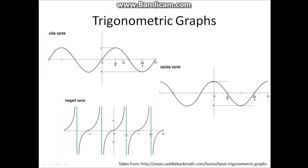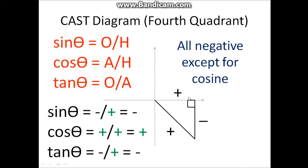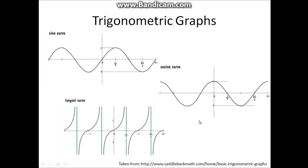You can use the CAST diagram to your advantage by subbing in all the values. If you cut the sine graph here, you can get A, S, T, C — because it doesn't contain S, so these parts are negative. And here where it's positive: A is positive, C is positive, while S and T — these are negative or positive accordingly. You can just use the graphs as a reference for the CAST diagram.